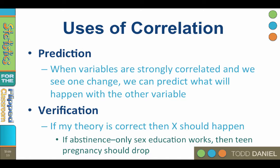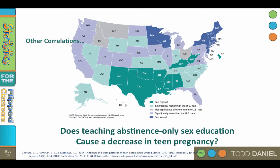For example, if abstinence-only sex education in public schools decreases teen pregnancy, then I should see lower rates of teen pregnancy in places where abstinence-only sex education is taught. I would also expect to see higher rates of teen pregnancy where comprehensive sex education and contraception use is encouraged. So, does teaching abstinence-only sex education cause a decrease in teen pregnancy? Let me see if I can verify my theory.